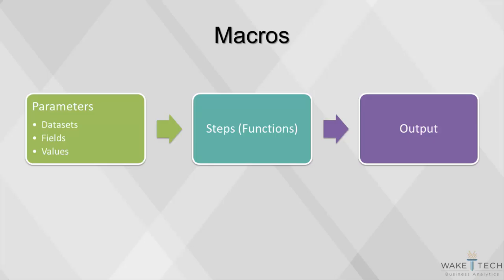The parameters of a macro are the input. This can be datasets, fields, or values. The parameters are a component that will change with each call to a macro. After the steps of the macro are complete, the output will be returned, and like the parameters, can also be of different types.